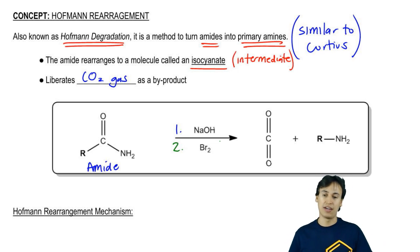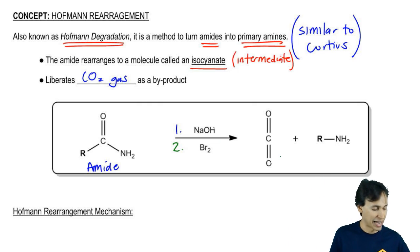After you're able to add one equivalent of the bromine, what we're going to see is a rearrangement take place and a decarboxylation. That's going to produce CO2 gas and the part we really care about, the amine.